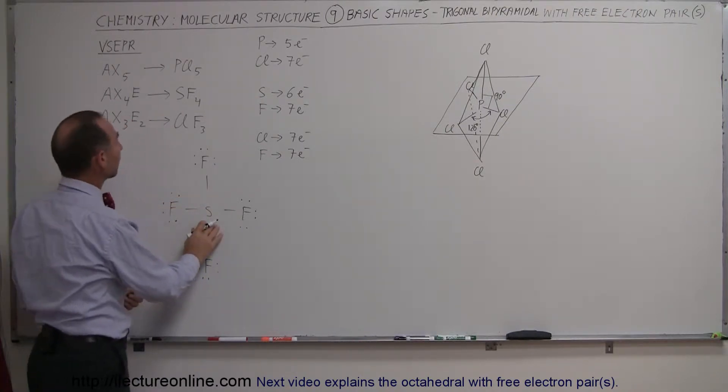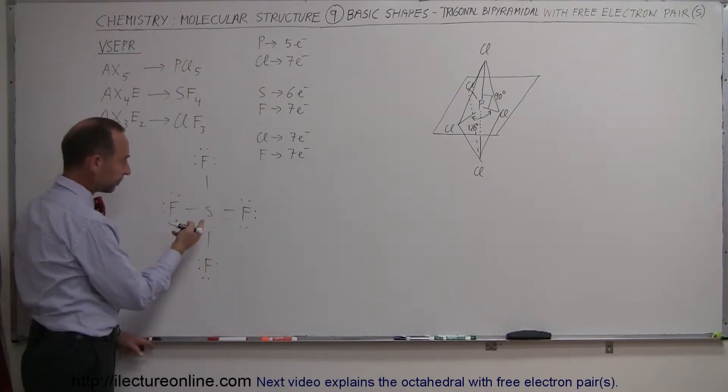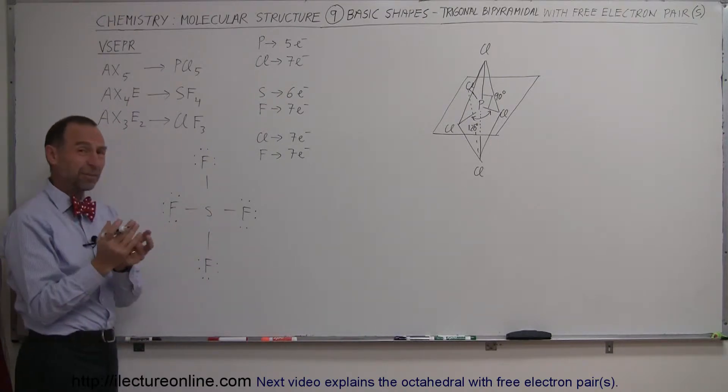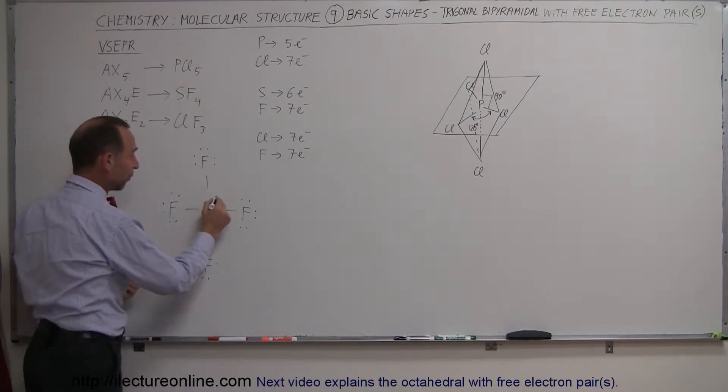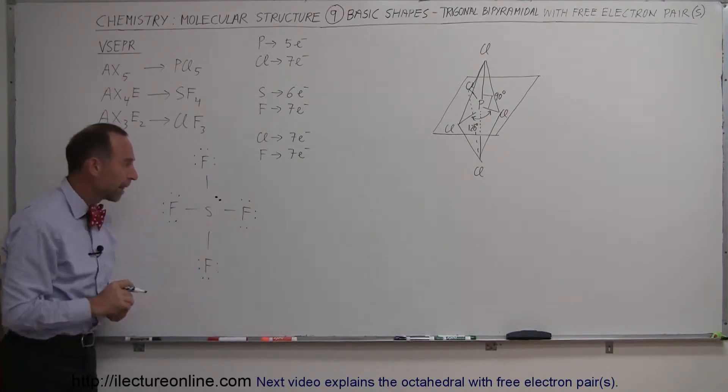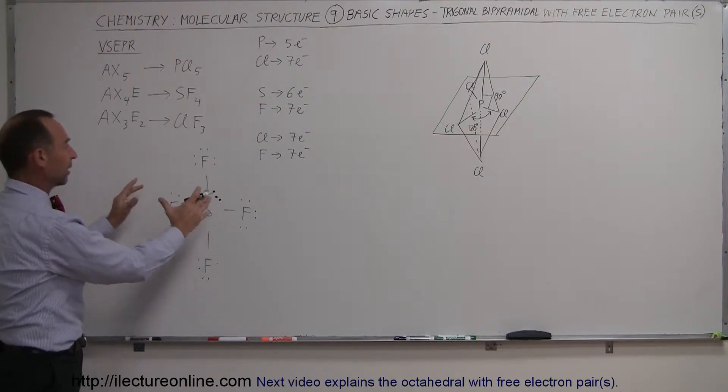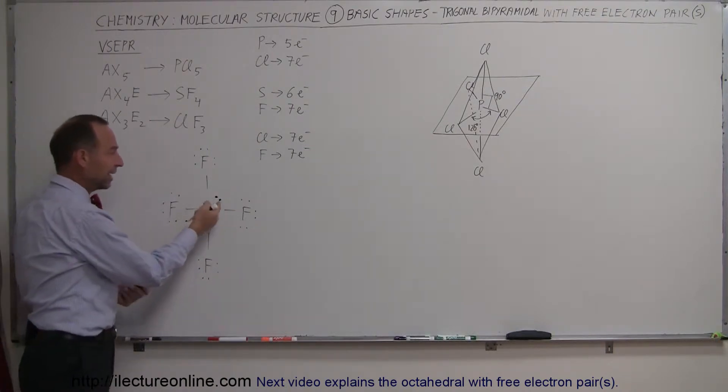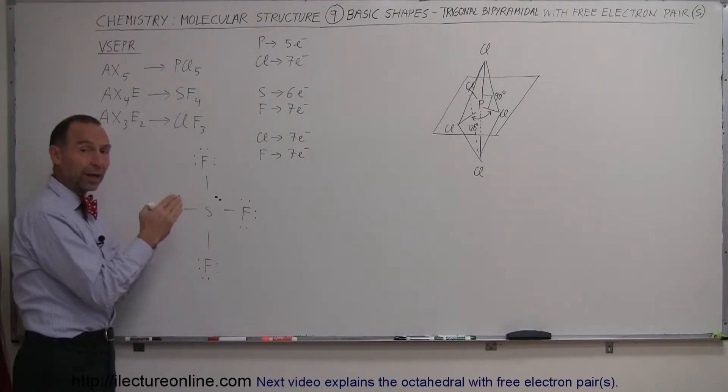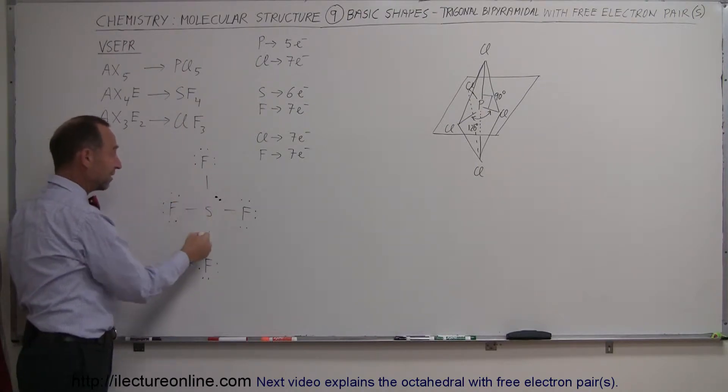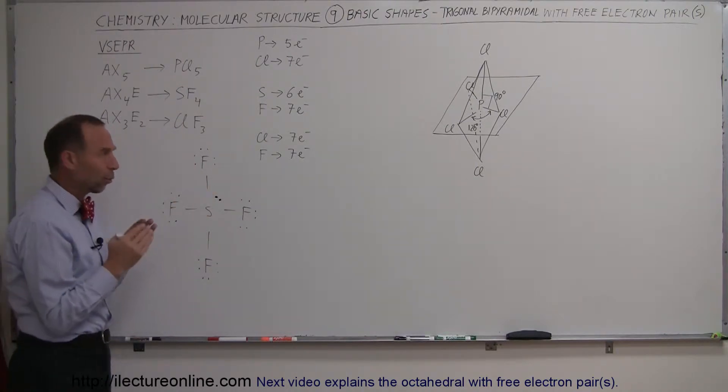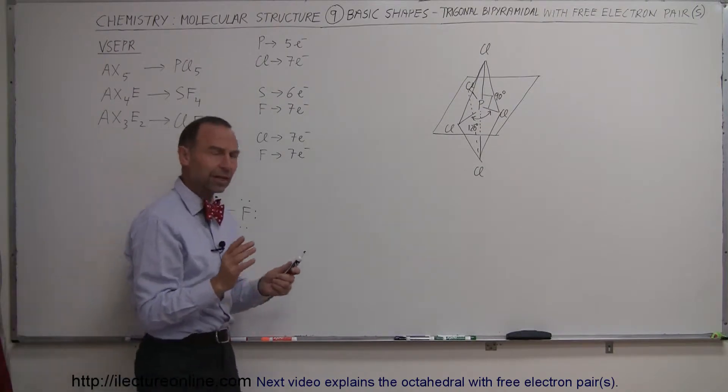Now sulfur started out with six free electrons. That means four of them were taken up in the bonds. That means it has two more left over. So you have one additional free electron bond pair like that. Now what happens when that now resets itself in a molecular shape? Now obviously these two electrons are going to have a greater repulsive force against these electrons taking up in the bonds. So where will that free electron pair be?